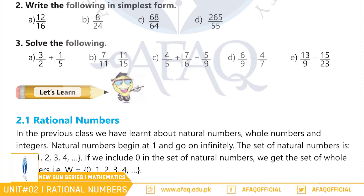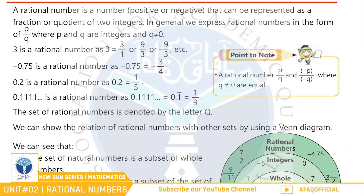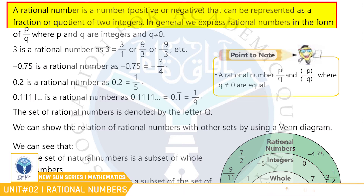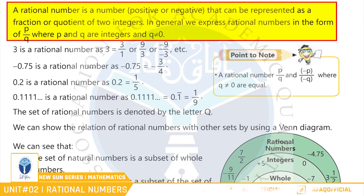اب ہم اگلے ٹاپک کی طرف بڑھتے ہیں جو کہ ہے 2.1 rational numbers. A rational number is a number — positive or negative — that can be represented as a fraction or quotient of two integers. وہ number جو positive یا negative ہو اور دو numbers کے fraction یا quotient کی شکل میں represent کیا جاتا ہو جیسا کہ P by Q جبکہ Q is not equal to zero، اور P اور Q دونوں integers ہوں.